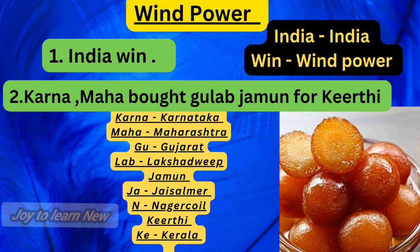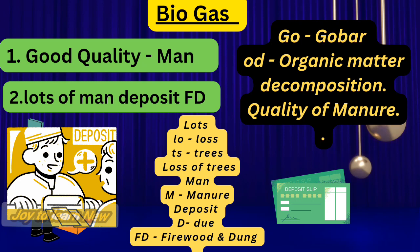Biogas shortcut: 'Good quality man' — man should have good qualities. Second shortcut is 'lots of man deposit FD.' FD is nothing but fixed deposit. Good quality: GO refers to biogas, OD — O refers to organic matter, D refers to decomposition. Decomposition of organic matter yields biogas and it improves the quality of manure.